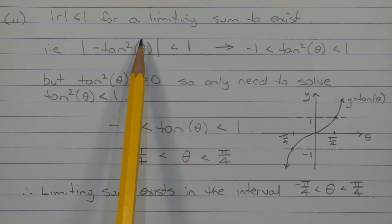Now because we're taking the absolute value of a negative expression, the absolute value will turn this negative into a positive, or 0 for that matter. So removing the absolute value brackets and rewriting the expression as a three-way inequality, we get negative 1 less than tan squared theta less than 1.